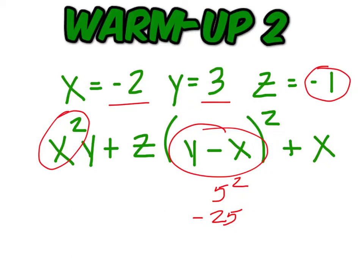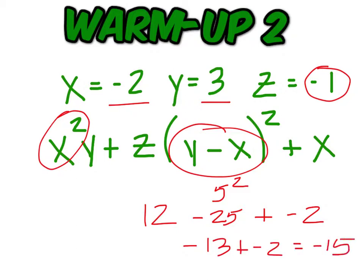Square the x to get 4, and then times y is 12, and then back here you're going to have plus x, which is a negative 2. So 12 minus 25 is negative 13, and then plus a negative 2 is negative 15. The answer is negative 15.